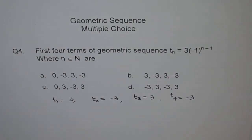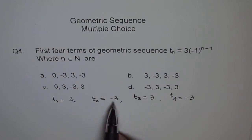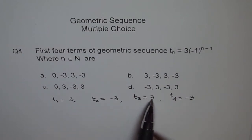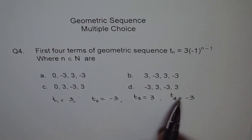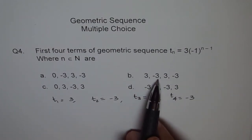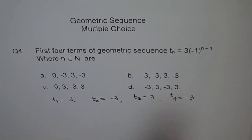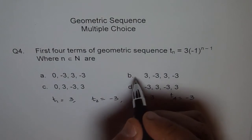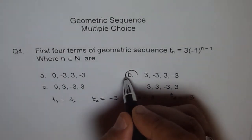This is one way of looking into it. We get the sequence 3, minus 3, 3, minus 3. So it matches with option B. That is our correct answer.